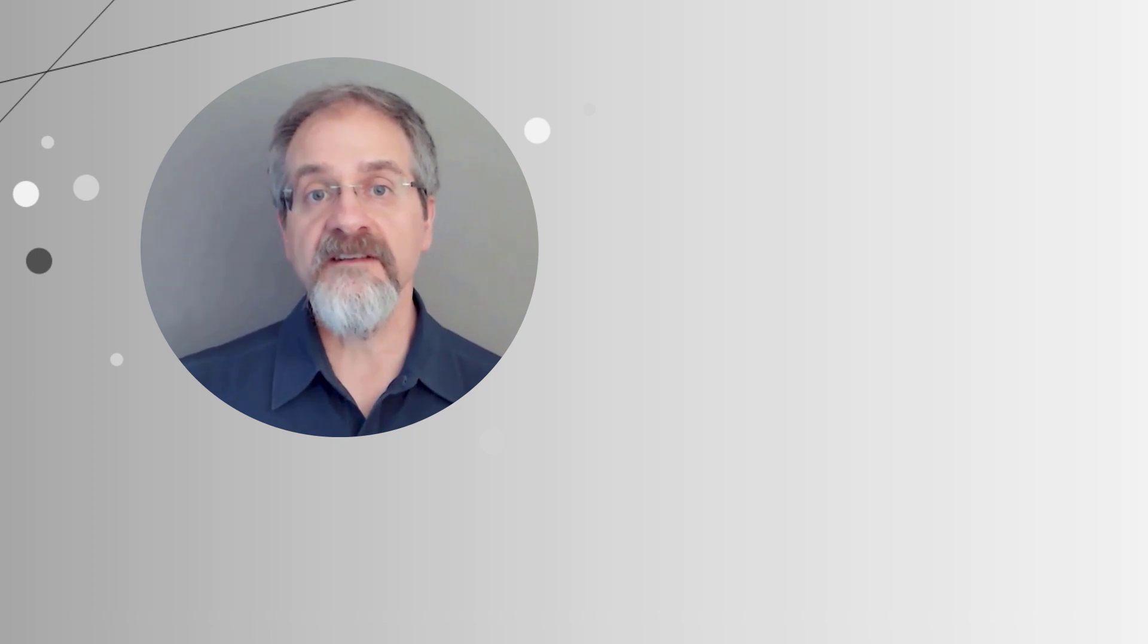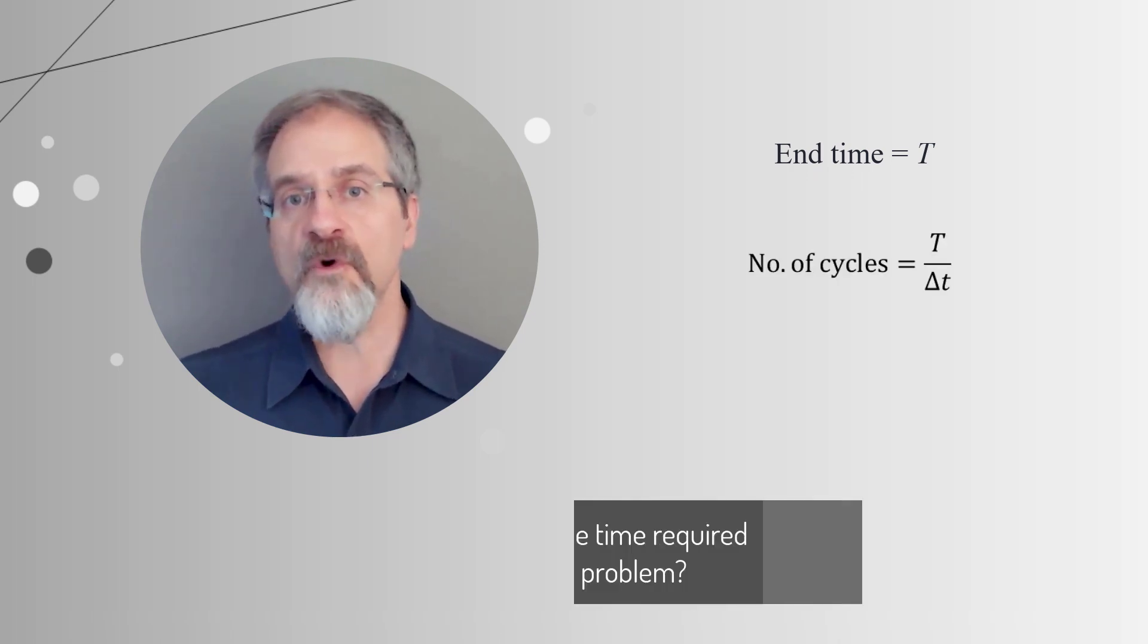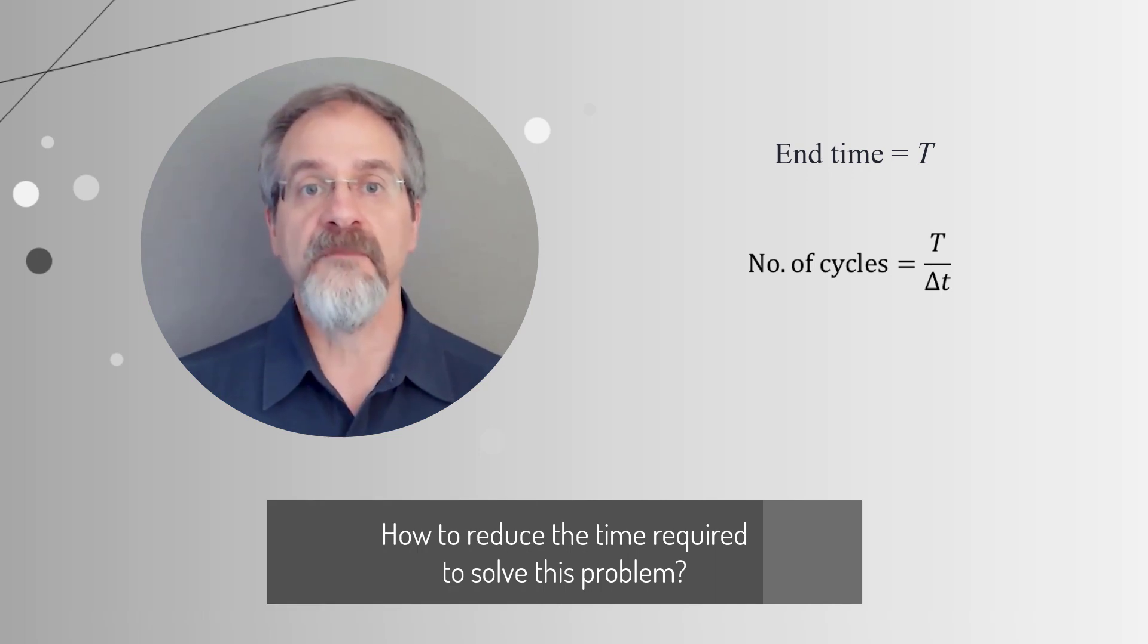For a given simulation with an end time T, the solver needs to solve the FEM equations for a certain number of cycles, which is given by T divided by the time step size. Now what if we wanted to reduce the time required to solve this problem? We would need to decrease the number of cycles for the problem, which can be achieved by increasing the critical time step.